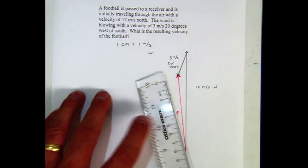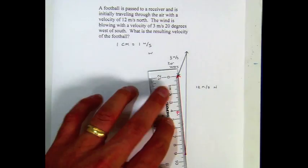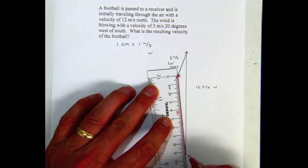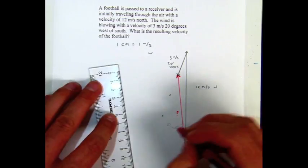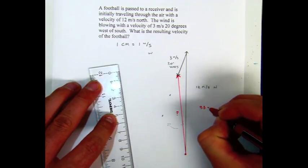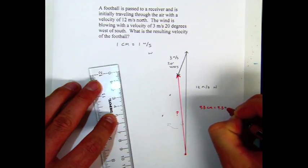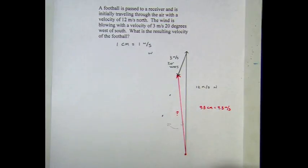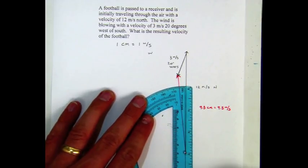So our first step then is how long is it? That's going to give us the magnitude. And it looks like it is 9.3 centimeters. So 9.3 centimeters, which is 9.3 meters per second when we use our scale. So you can see it lost some speed because of the wind.